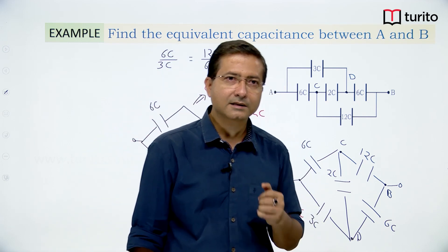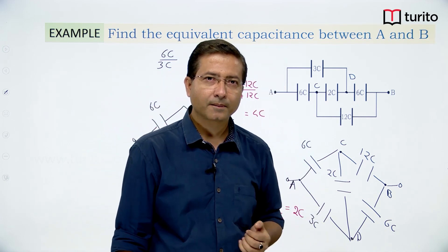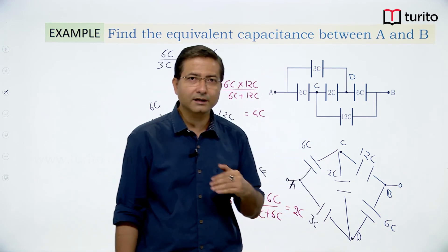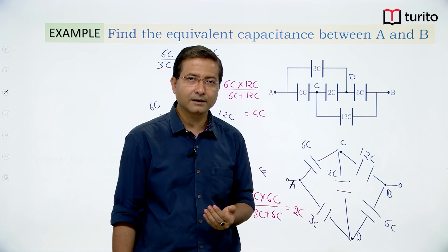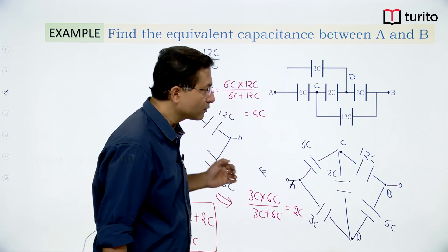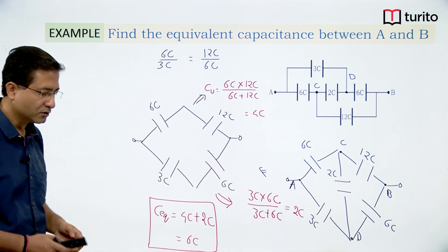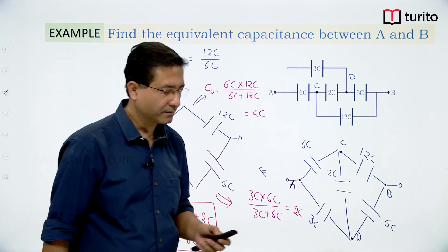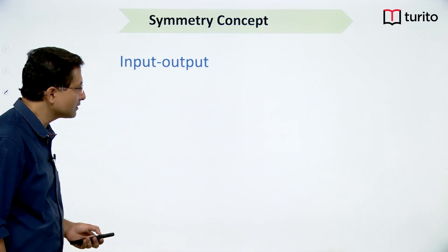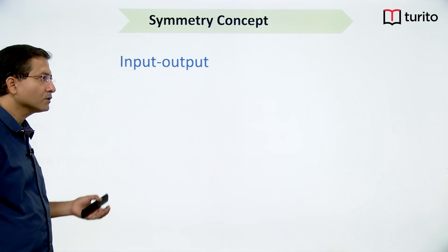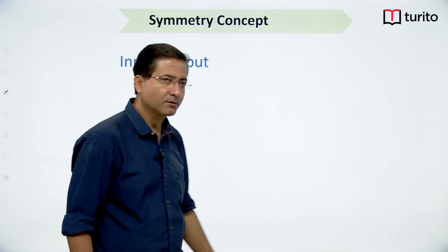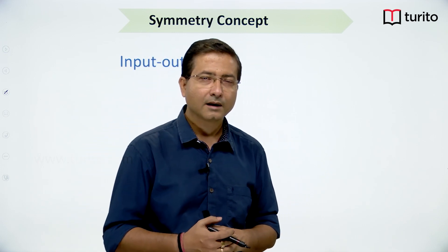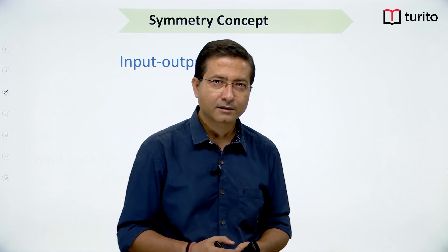If the circuit contains a particular symmetry, we can use simple voltage or current division to reduce it. There are two concepts of circuit symmetry: input-output symmetry and folding symmetry.